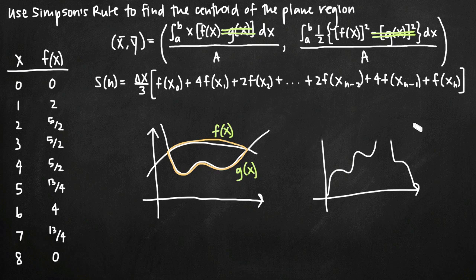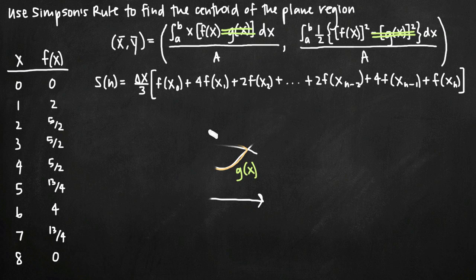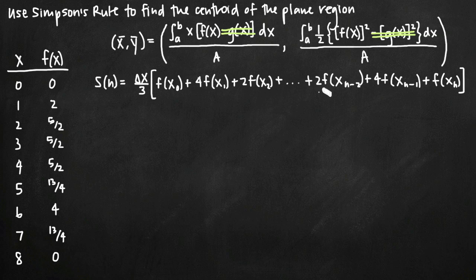Since we just have f, we can ignore the g parts of our formula. We need to find three values: first is A using Simpson's rule in the standard way; second is the integral of x·f(x), where we'll adapt Simpson's rule by multiplying each f value by its corresponding x value; and third is ½ times f squared, also using Simpson's rule. Let's calculate these three things. We'll start with the area, as it's the most straightforward.